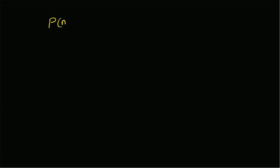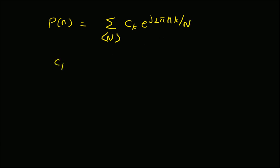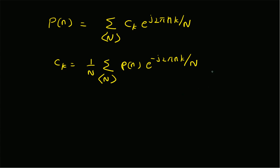The discrete time Fourier series of a given signal p of n is defined as the summation over the fundamental period: c_k times e to the power j 2 pi n k over capital N. The coefficient c_k is given by 1 over N, times the summation of p of n times e to the power minus j 2 pi n k over capital N, summed over the fundamental period.